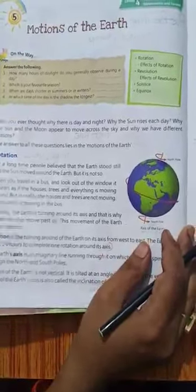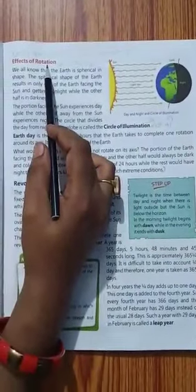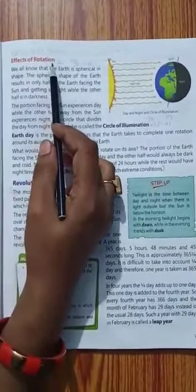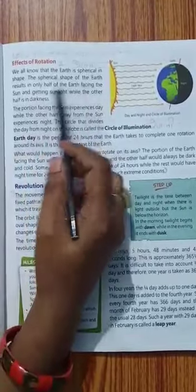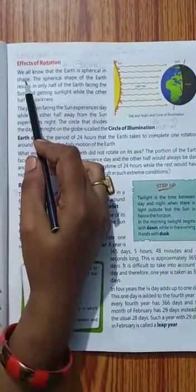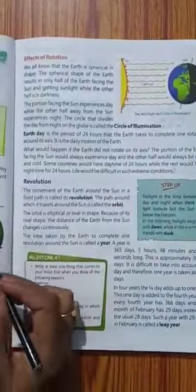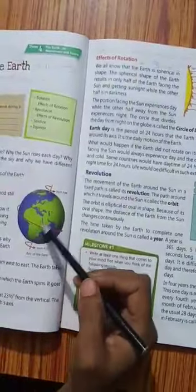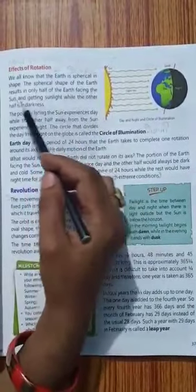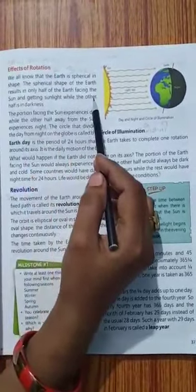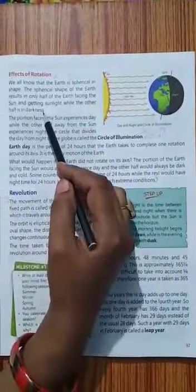Now, next topic is effect of rotation. Ab iska effect kya hota hai? Prabhav kya hota hai rotation ka? We all know that earth is spherical in shape. Hammei pata hai, earth kaisi hai shape mein? Gol hai, golakar hai. The spherical shape of the earth result in only half of the earth facing the sun and getting sunlight while the other half is in darkness.